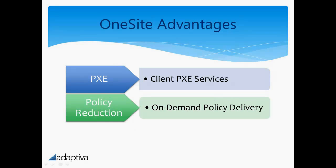Policy reduction significantly reduces client policy traffic and requests by reversing the native Config Manager policy polling model. Instead of clients periodically polling for new policies, even when none are available, OneSite instead notifies clients when new policies are available for them, so that they only need to poll when a new policy is in fact available. In addition to reducing policy traffic and load on management points by more than 90%, this also makes policy refreshes in Config Manager effectively real-time.